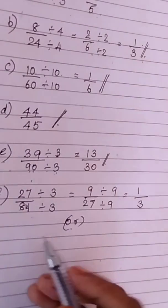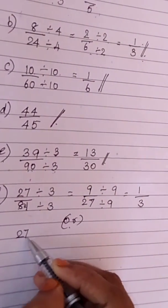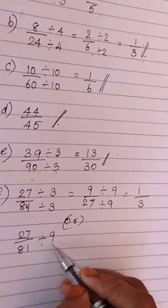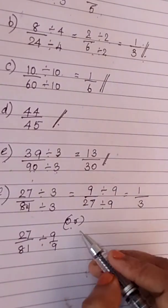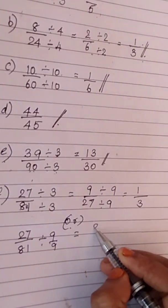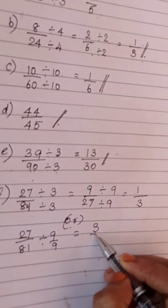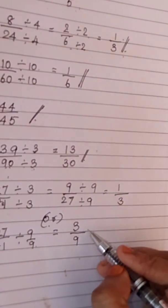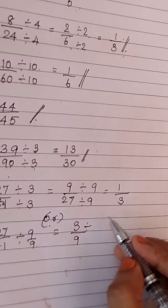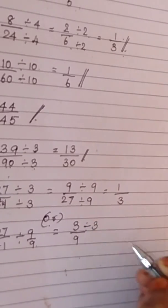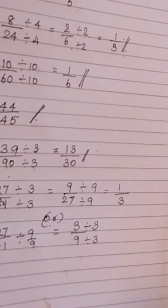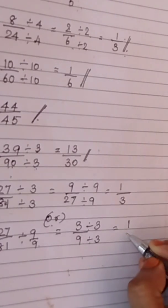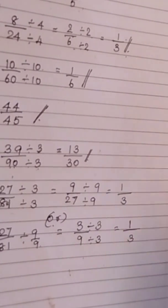We can do in other way. You can take the number and divide it by 9 in the numerator and denominator. So, 9 3s are 27 and 9 9s are 81. Again, this 3 by 9 is commonly divisible by 3. We can write divide by 3 in the numerator and denominator and then 3 1s are 3, 3 3s are 9. Just check with any other common factors.